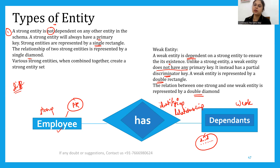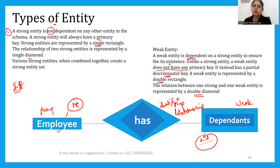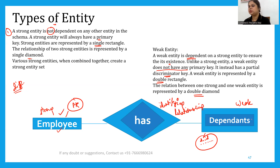If you are a student preparing for any competitive examination, you need to remember the symbols and the differences at each point. Each point has a meaning — which statement is true or false, which key is a primary key, which is not a primary key, which is a partial key, and which is a discriminator.